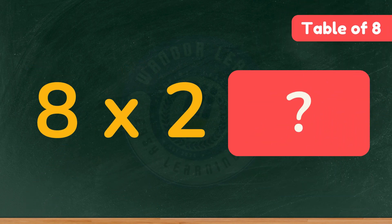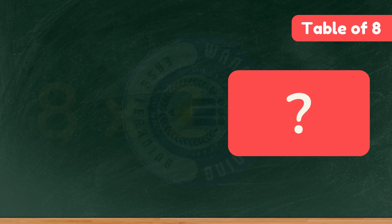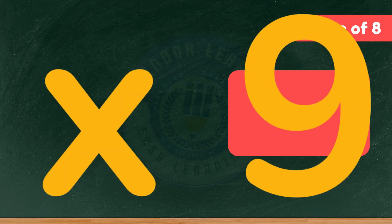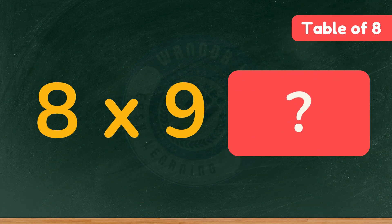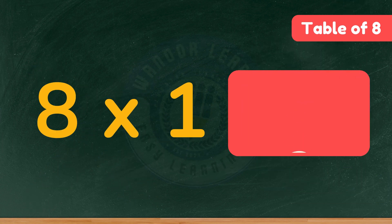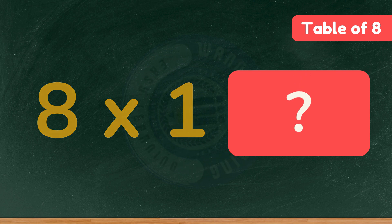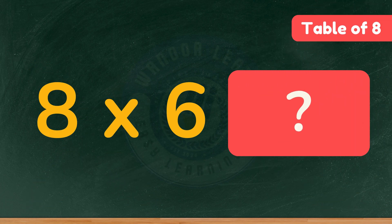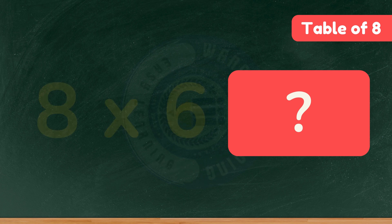What is eight times two? Well done, sixteen. What is eight times nine? Amazing, seventy-two. What is eight times one? Yes, eight. What is eight times six? Perfect, forty-eight.